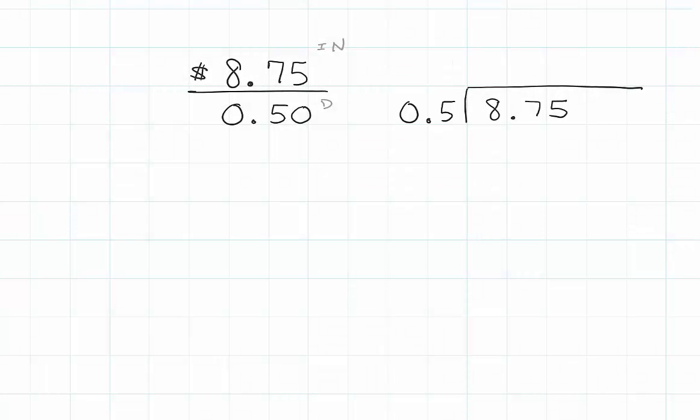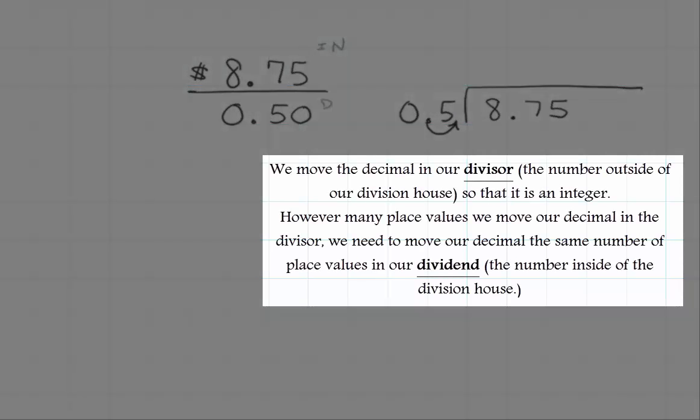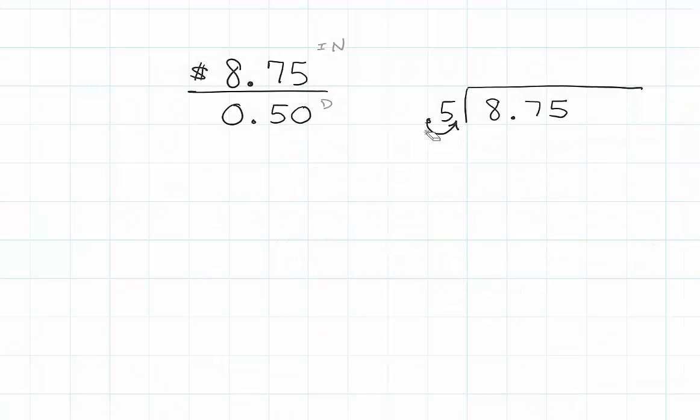But we've got to make sure that if we move that decimal one place value to make it 5, we also move the decimal the same amount in the number inside our division house.